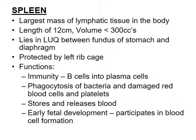The spleen looks C-shaped on ultrasound. We measure its length, and it should be less than 12 centimeters. If it's greater than 12 centimeters, we calculate the volume of splenic tissue. Of course it could be a skinny long spleen rather than a fat spleen, so when we calculate the volume it should be less than 300 cubic centimeters of tissue.